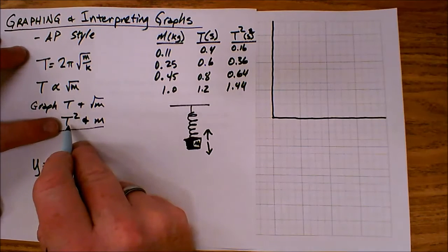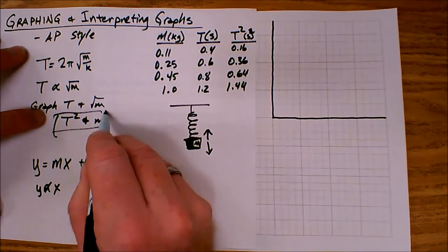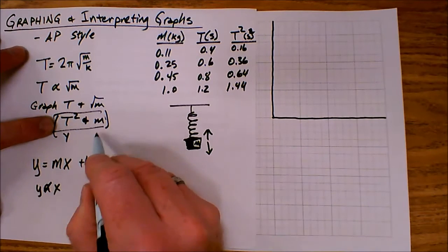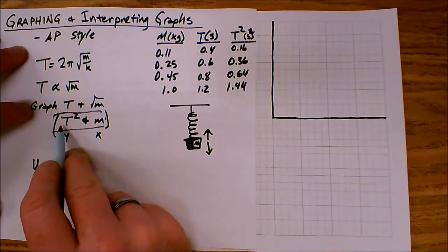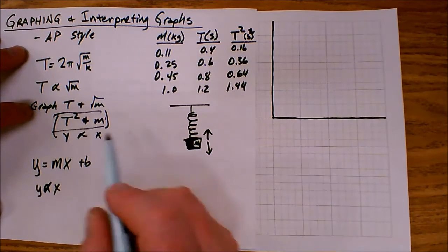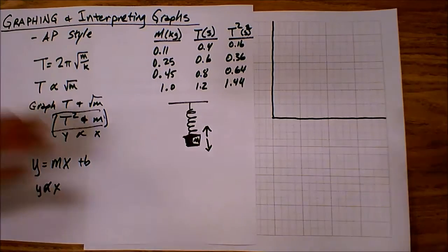And so, the first variable here, so we say y is proportional to x. So the first variable here, the T, or in this case, the T squared, that's going to be my y. And m is going to be my x, because T squared is proportional to x.